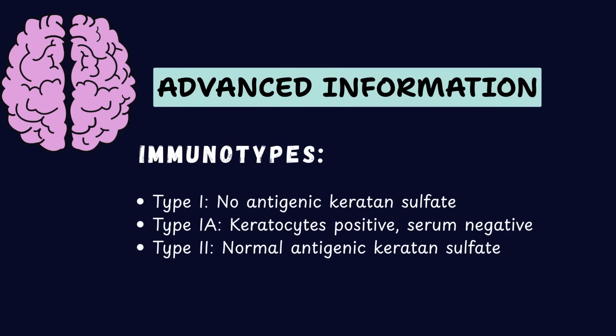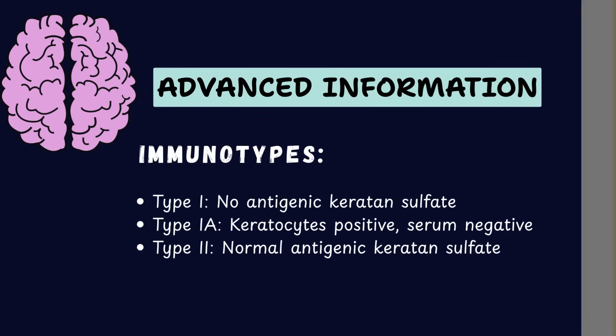In type 1a, the serum lacks detectable keratan sulfate but the keratocytes in the cornea still react with the antibodies. In type 2, keratan sulfate is present in normal amounts in both the serum as well as the cornea.